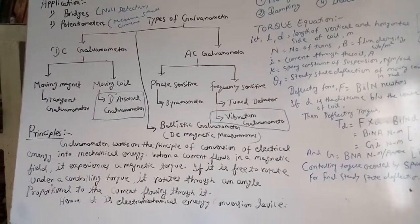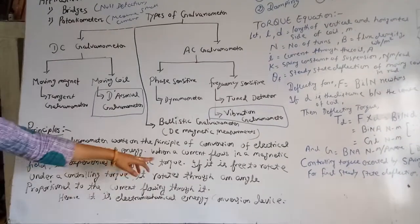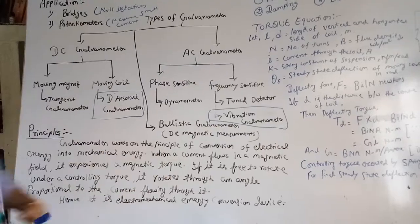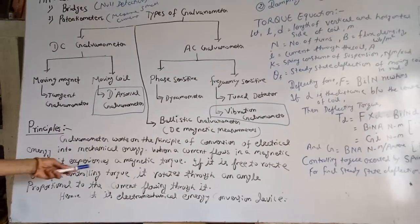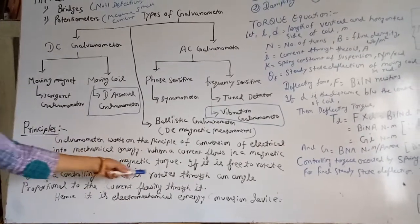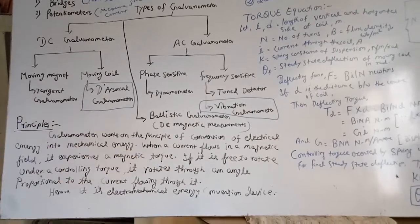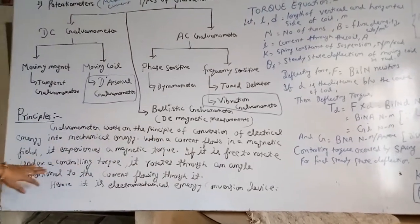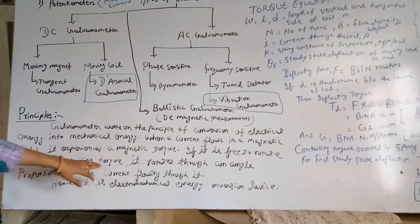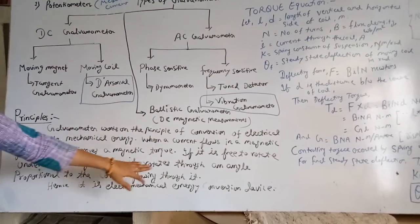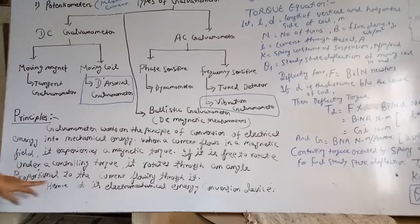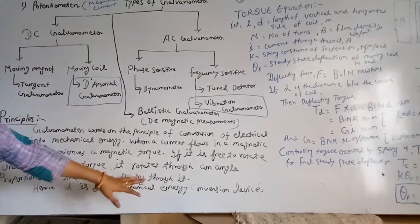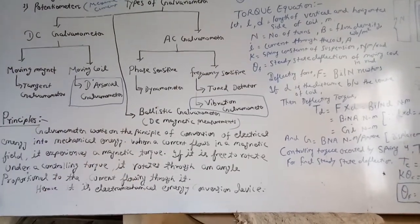When a current flows in a magnetic field, it experiences a magnetic torque. If it is free to rotate under a controlling torque, it rotates through an angle proportional to the current flowing through it.